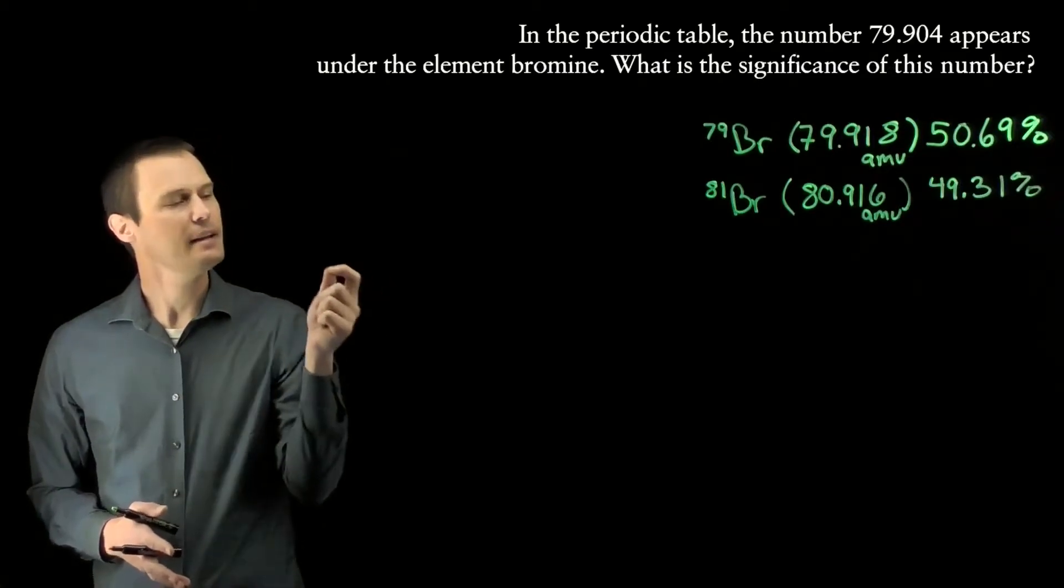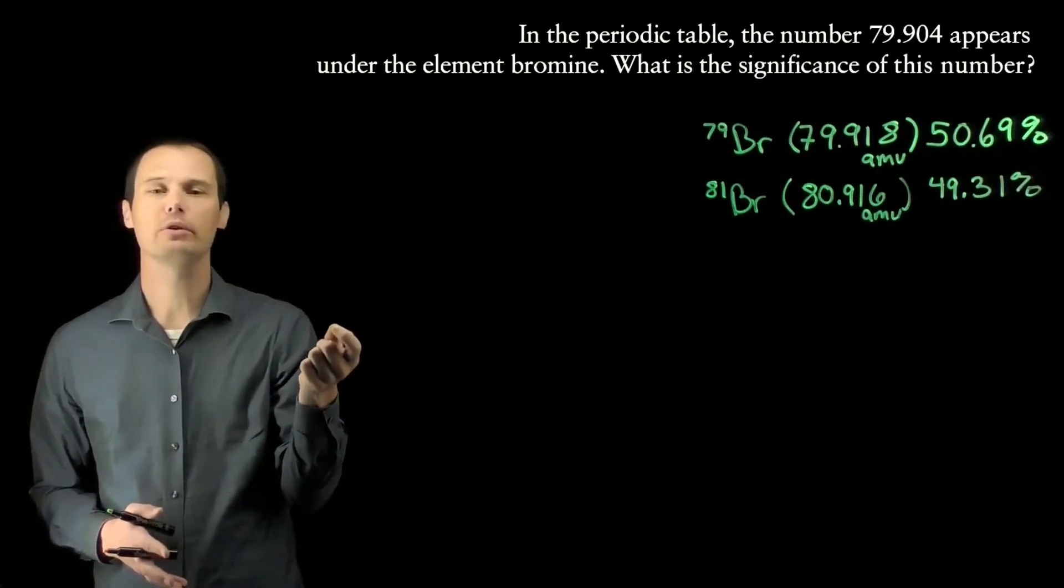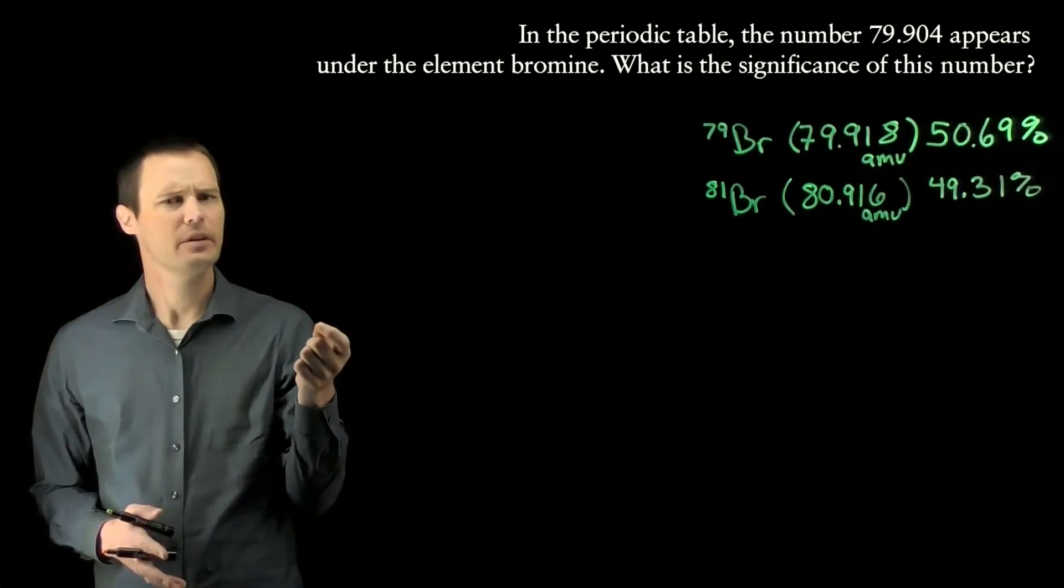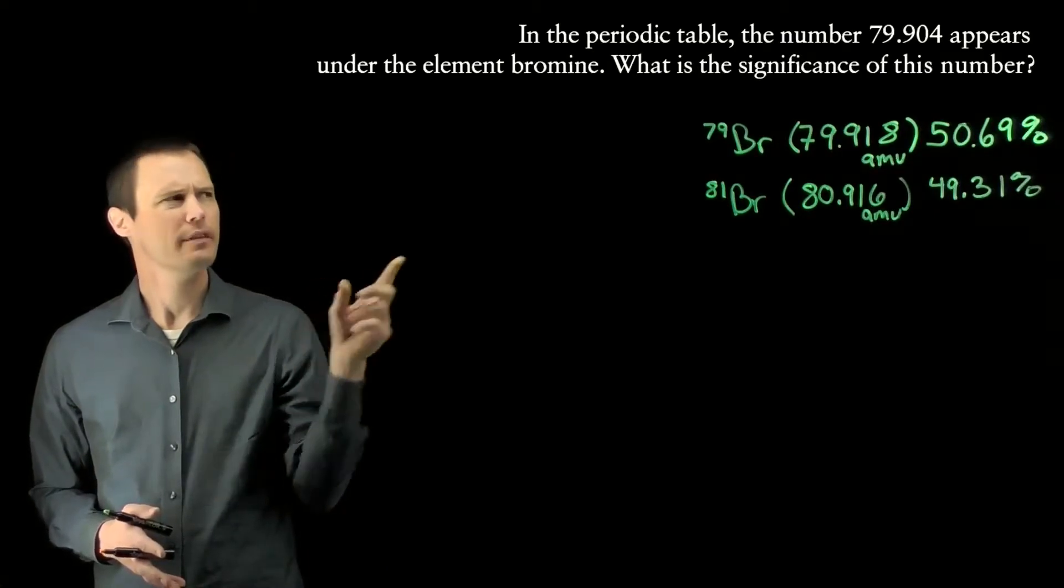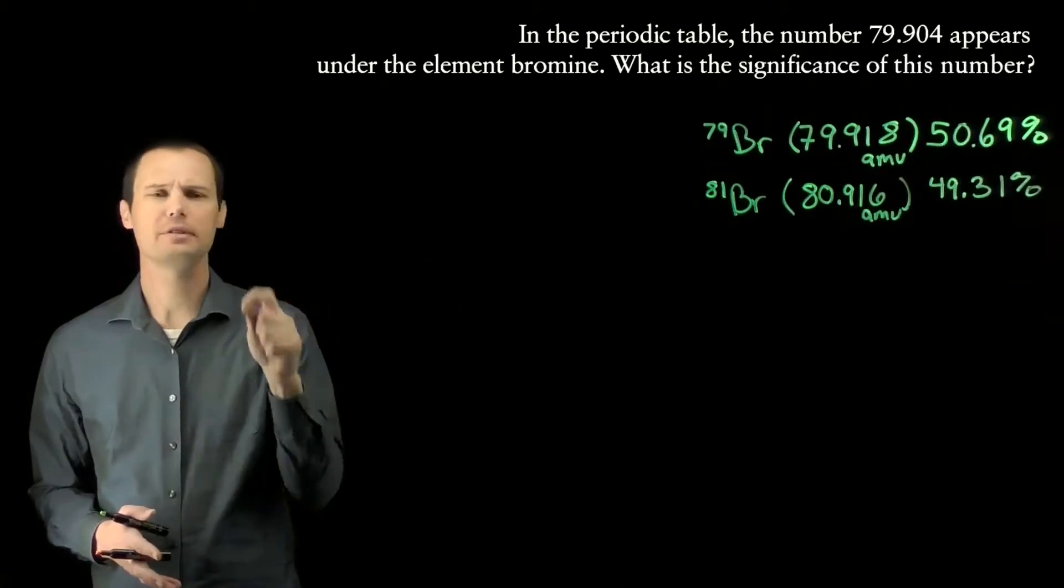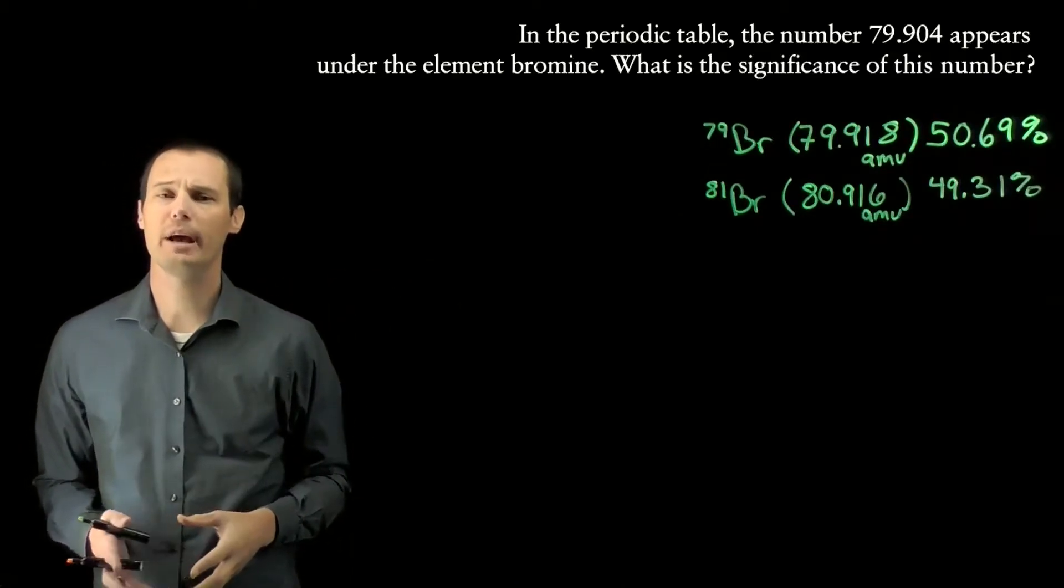If you were to take any individual bromine atom in the universe, it would not have the mass of 79.904. In fact, there are zero bromine atoms in the universe that have a mass of exactly 79.904 amu.